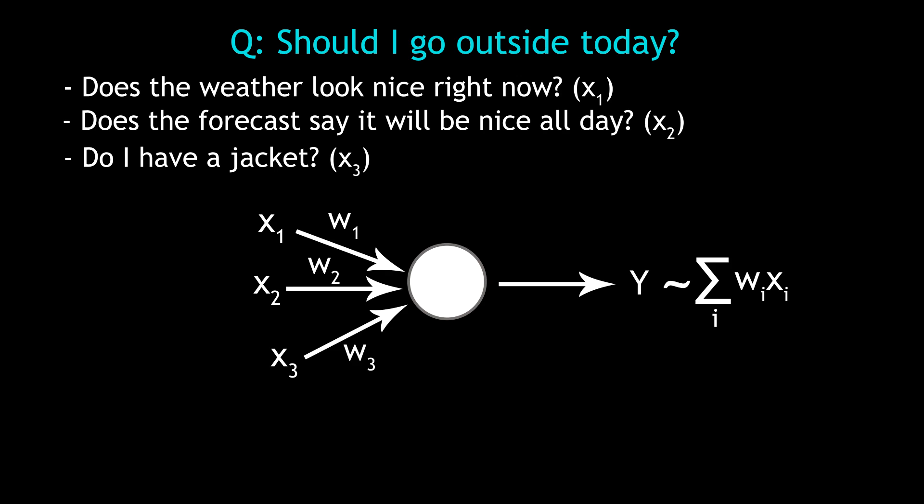It might matter a lot that the weather is nice right now, so you give it a weighting of two. It might matter a bit if the forecast says that it's going to be nice all day, so you give it a weighting of 1.5. And it may not really matter all that much to you if you have a jacket, so you just give it a weighting of one. Now all you have to do is set your bias. Let's say you set it at minus 2.5. Remember the bias has to be negative.